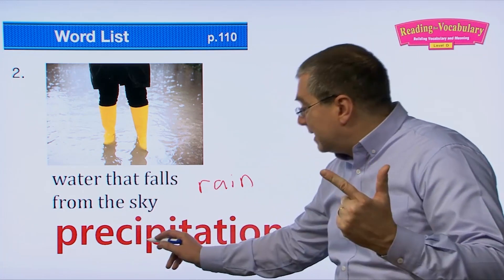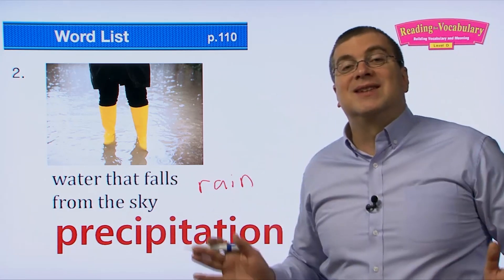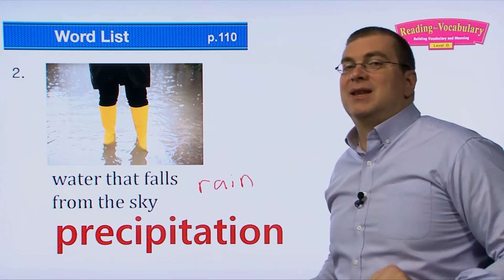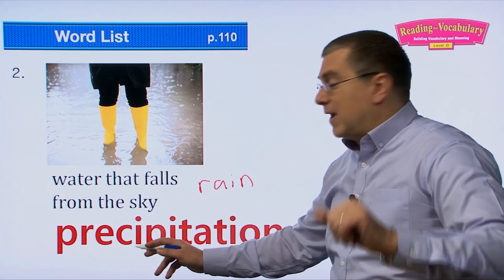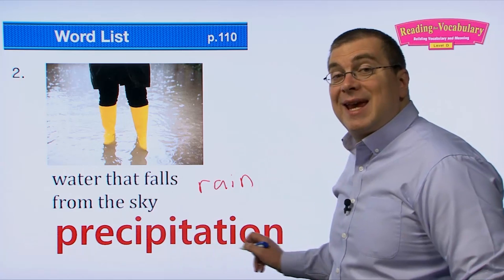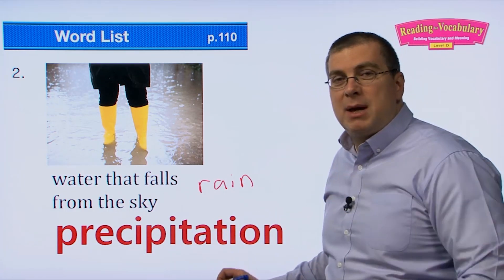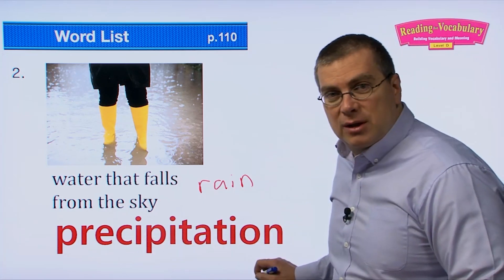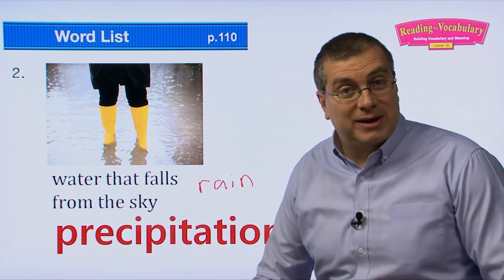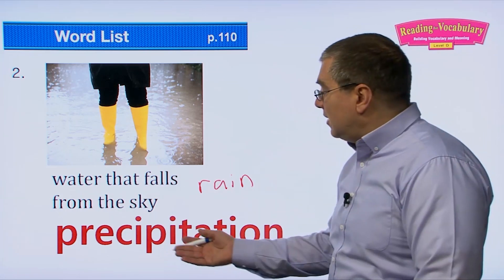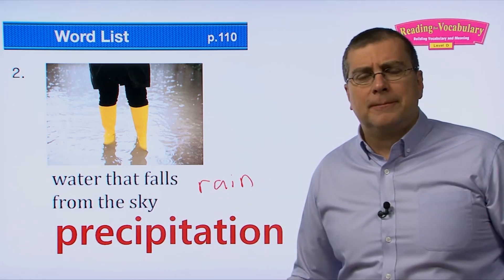Precipitation has five syllables. Let's say it slowly first, then fast: pre-ci-pi-tation... precipitation. Precipitation just means rain — it's the more scientific word for rain.